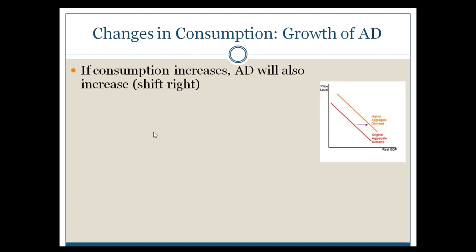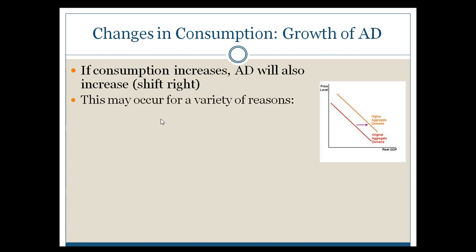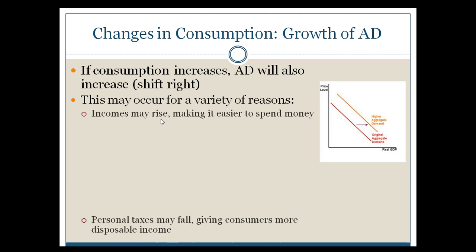Personal consumption is probably the biggest factor that tends to lead to movement of your aggregate demand curve, just because GDP is over 50% comprised of consumer spending. It's natural that consumer spending will make a difference in terms of the positioning of your AD curve at any one point in time. If you have a consumption increase, it will push to the right, and that can happen for a number of different reasons.